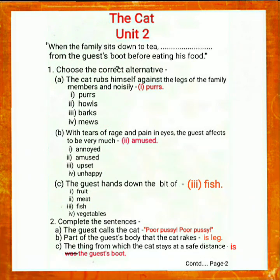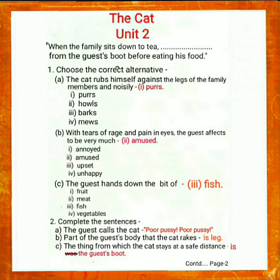Question No. 1: Choose the correct alternative. A. The cat rubs himself against the legs of the family members and noisily — option 1: purrs; option 2: howls; option 3: barks; option 4: mews. The correct answer is: the cat rubs himself against the legs of the family members and noisily purrs.